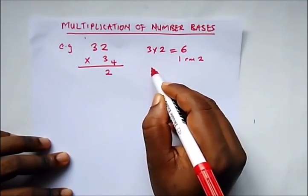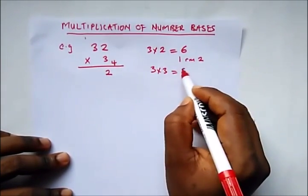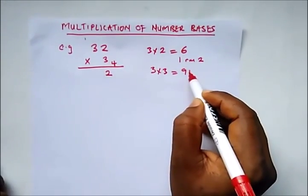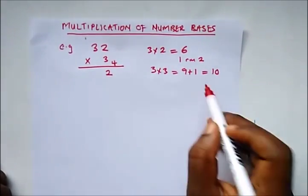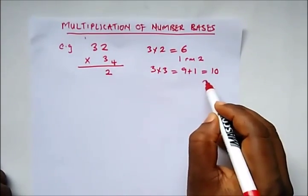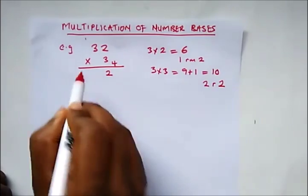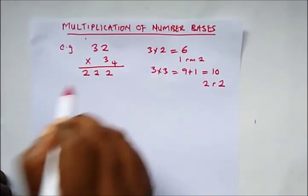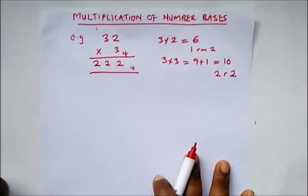The next step is 3 times 3, which gives us 9, plus the carried 1, which gives us 10. How many times would 4 go into 10? It is 2 remainder 2. So we write the remainder 2 here. This gives us our answer.